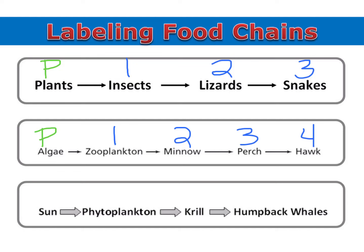And finally, one very important thing to understand is that the sun, while a very important source of solar energy, is not a source of chemical energy, and so it's not considered a trophic level. Our phytoplankton are our producers here, and we have primary consumers and secondary consumers.